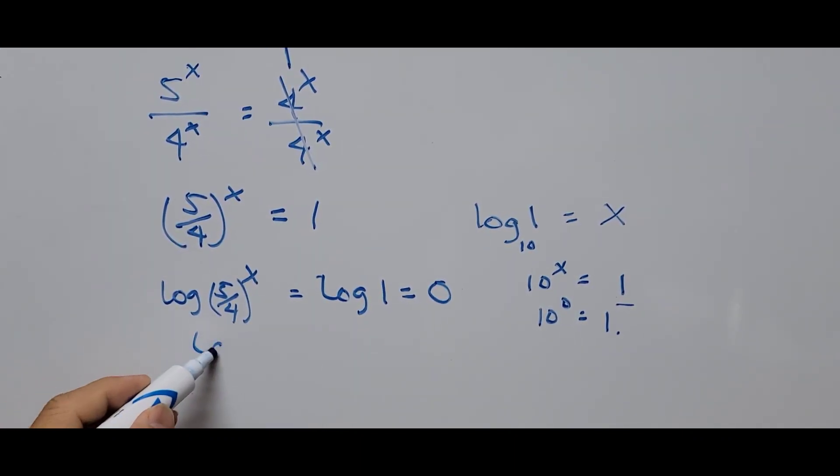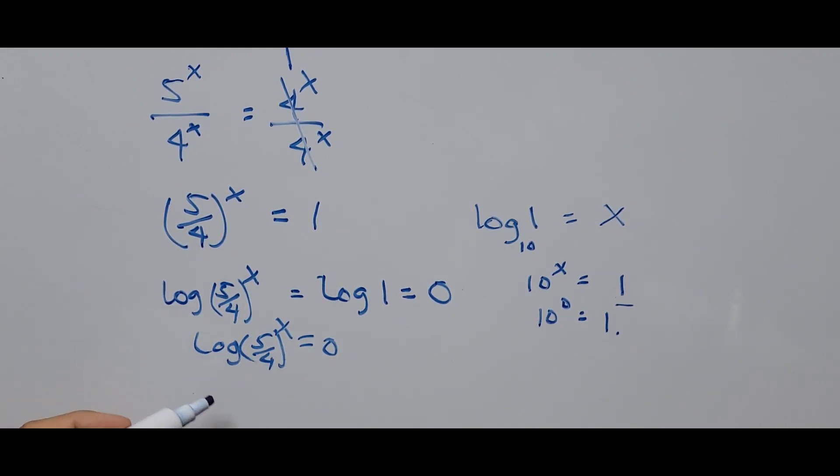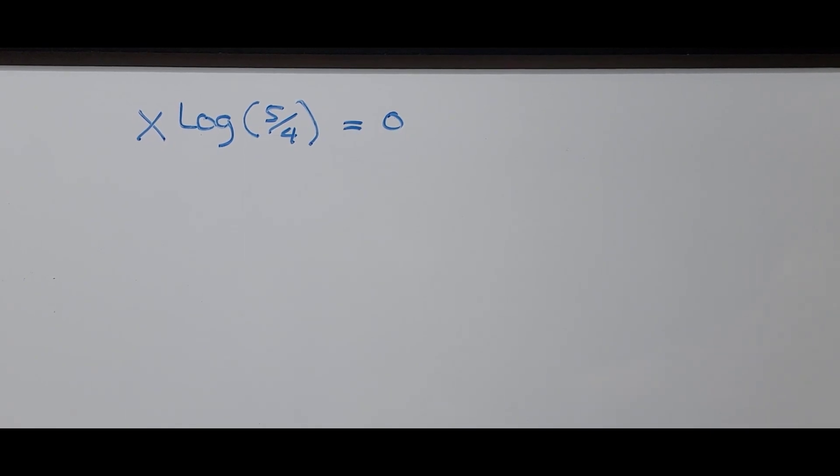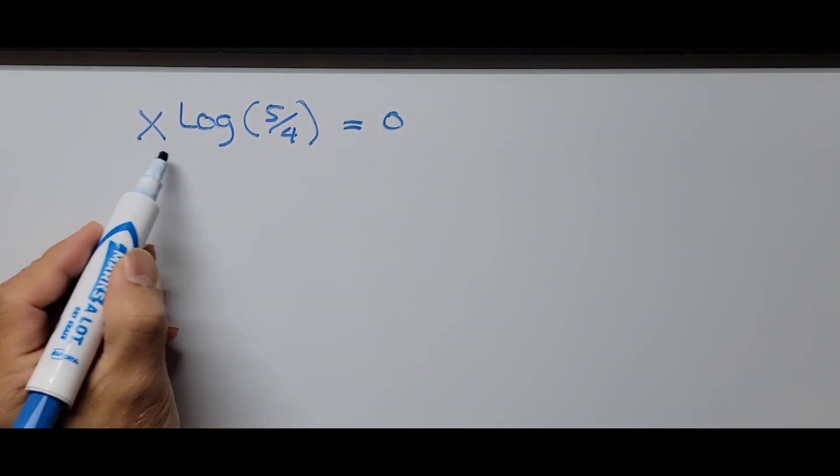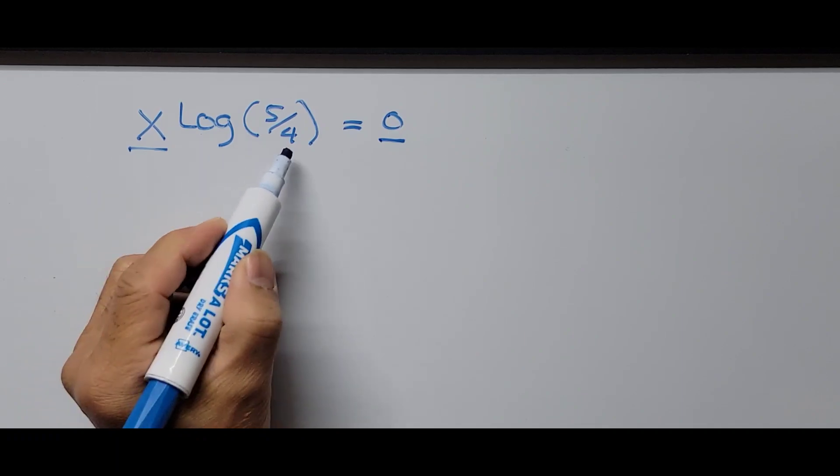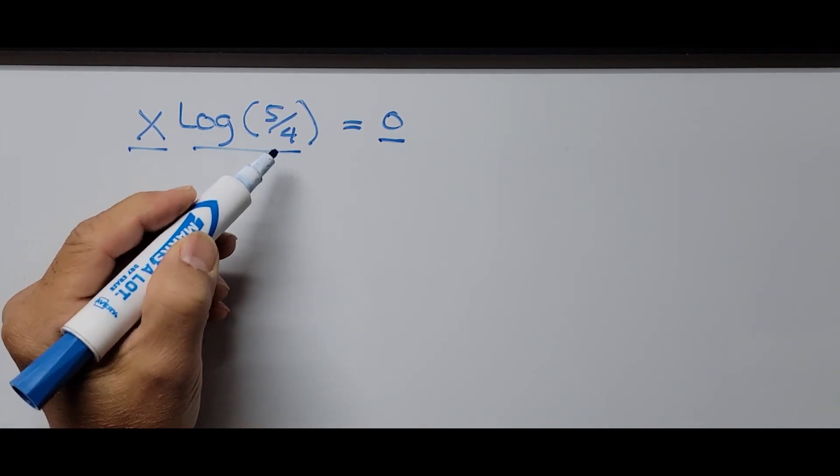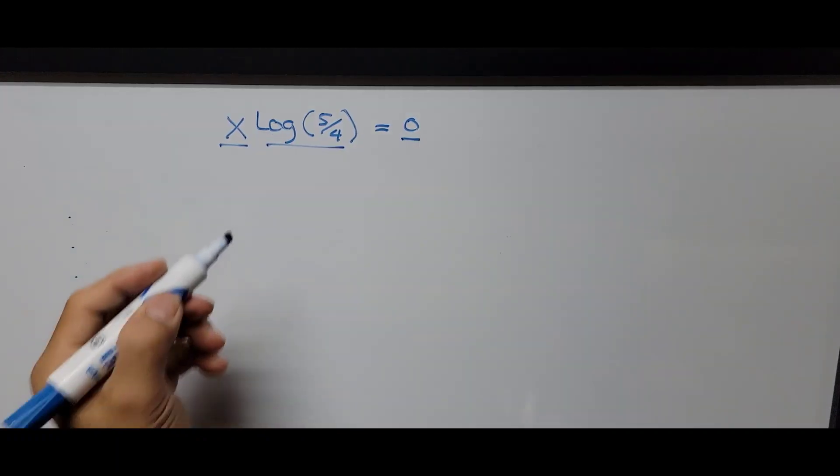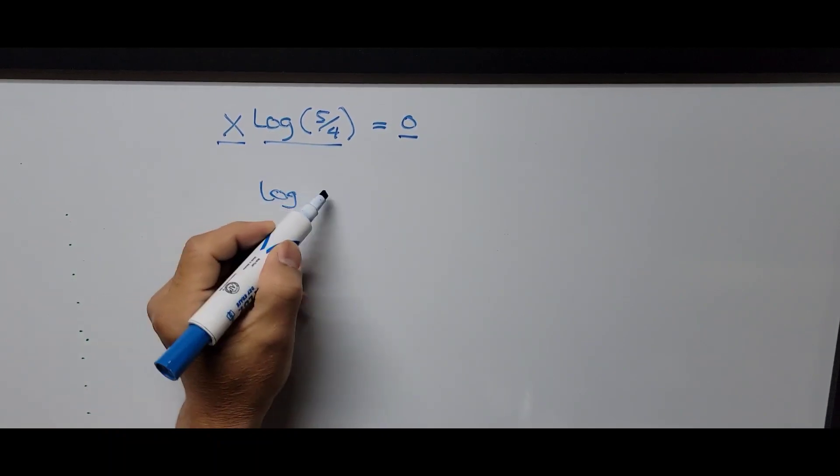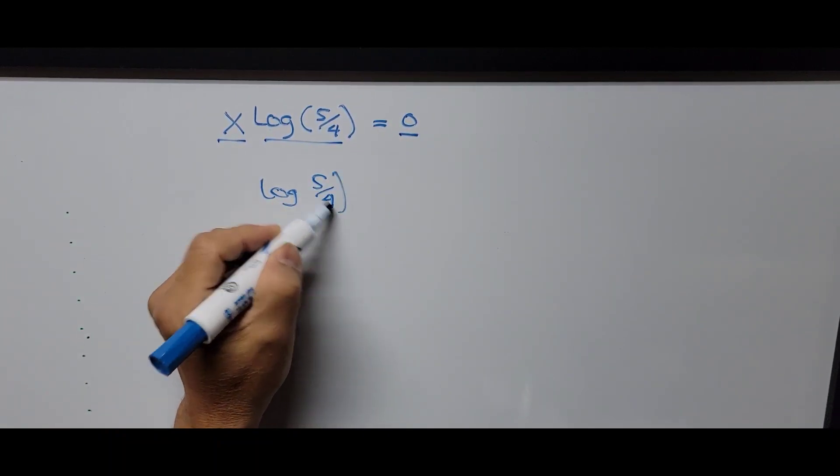From here, the equation becomes log of 5 over 4 to the power X equals 0. The exponent becomes coefficient: X log of 5 over 4 equals 0. From this equation we can say that X equals 0, because log of 5 over 4 is not equal to 0.